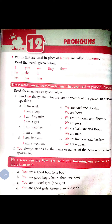'You' always stands for the name or names of the person or persons spoken to. 'I' and 'we' stand for the person or persons speaking, and 'you' stands for the person or persons spoken to. We always use the verb 'are' with 'you.' For example: you are a good boy — talking about one person. You are good boys — talking about more than one. 'You' is used for both singular and plural.